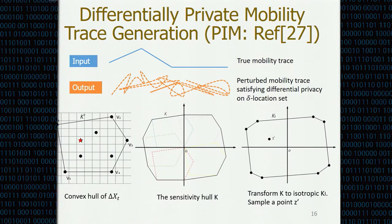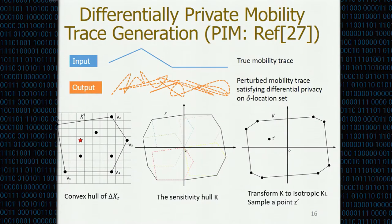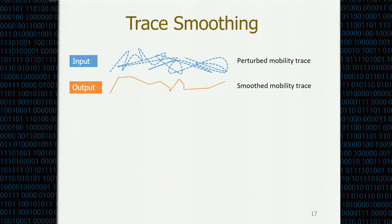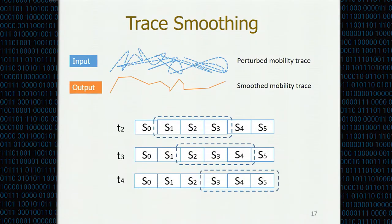After this process, the SSP only knows the perturbed mobility traces, meaning the location privacy of mobile participants is protected. But the SSP needs to use location information to assign tasks. How can we ensure the utility of those traces is good enough? Sometimes the added noise can be very large, making it unlikely for a participant to travel to sensing locations. Therefore, we further propose a trace smoothing module. The input to the trace smoothing module is the perturbed mobility trace, while the output is a smooth mobility trace, essentially based on a sliding window technique that averages coordinates among neighboring timestamps to generate coordinates for the current timestamp.